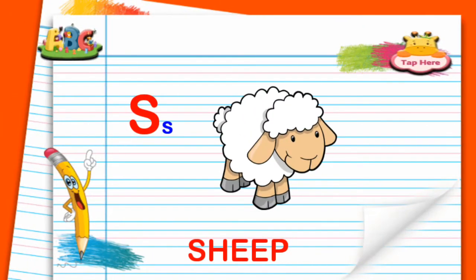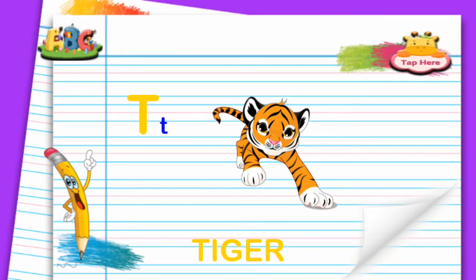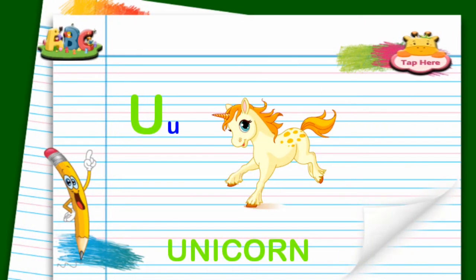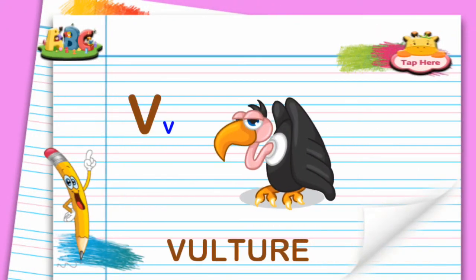S for Sheep. T for Tiger. U for Unicorn. V for Vulture.